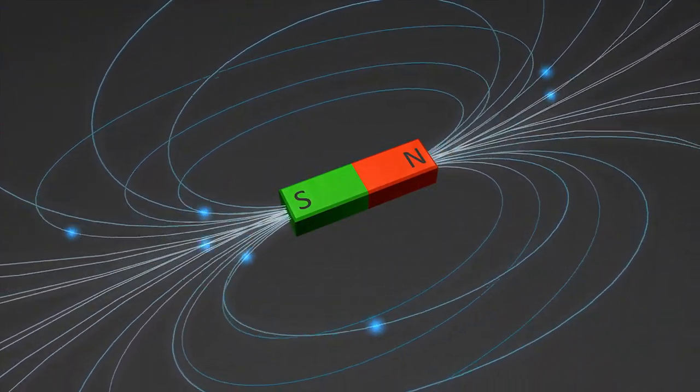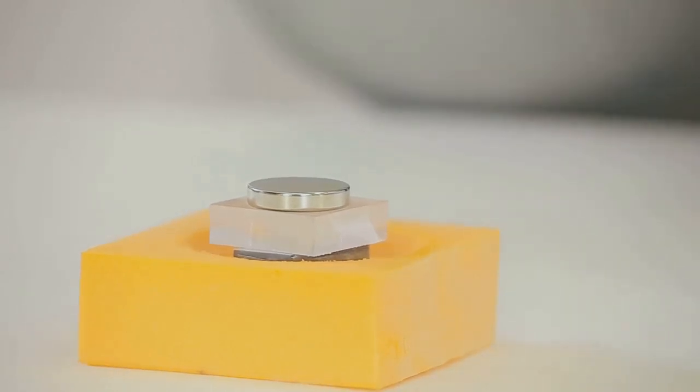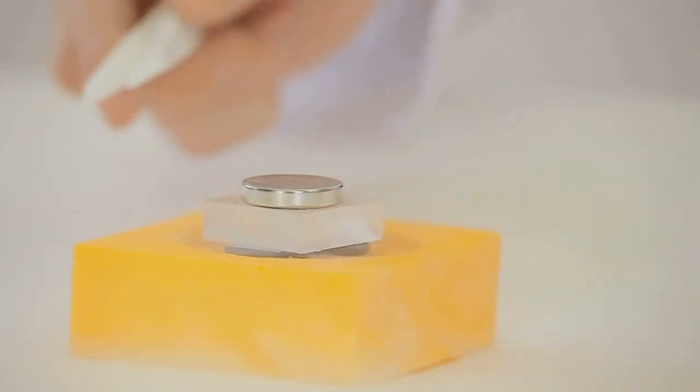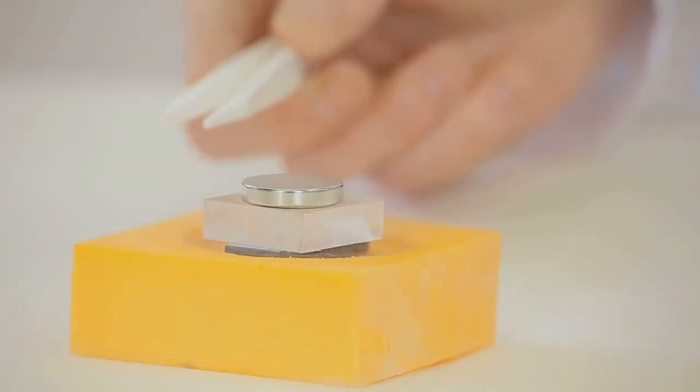Now, this happens when you try to put the same sides of two magnets together. If you try to put the north side of one magnet to the north side of another, they push each other away. The same happens with the south sides, too.